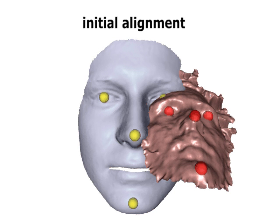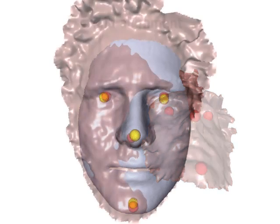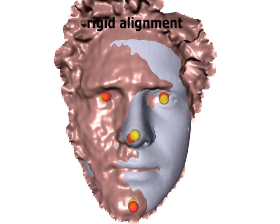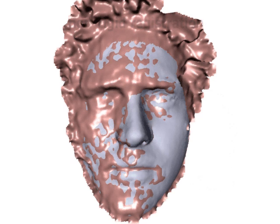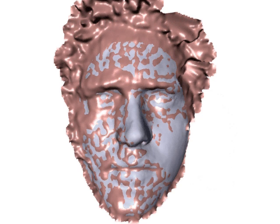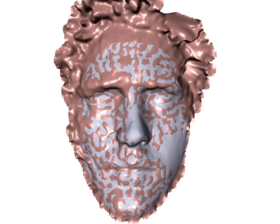We use the detected feature points to estimate a rough initial alignment with our template mesh. Then, we use non-rigid registration to deform the template mesh such that it best fits the input data.